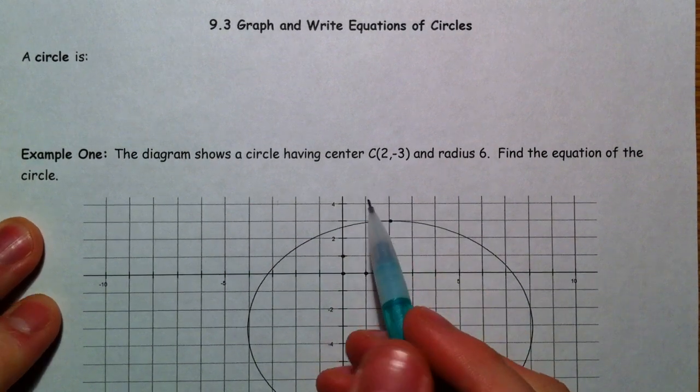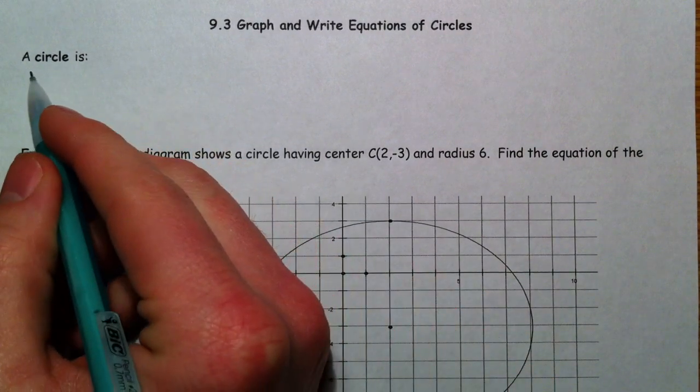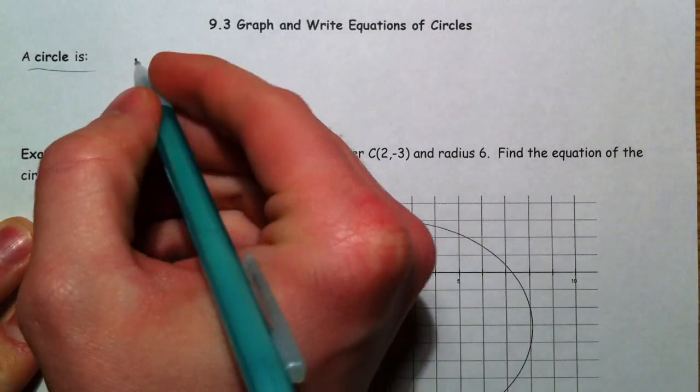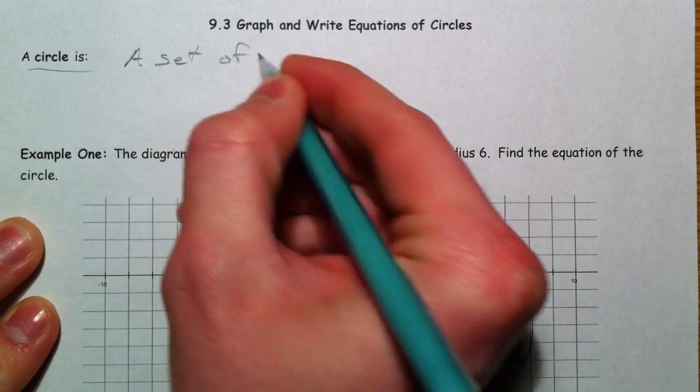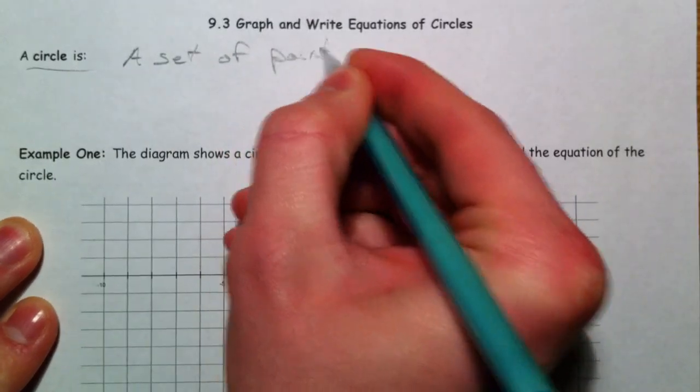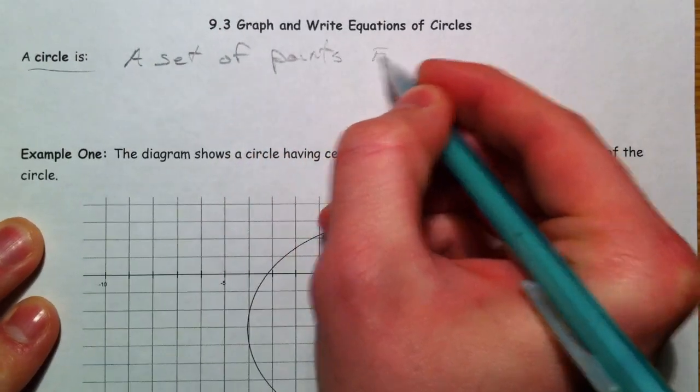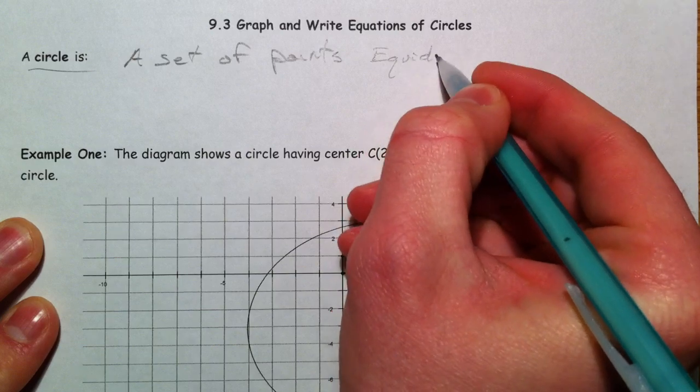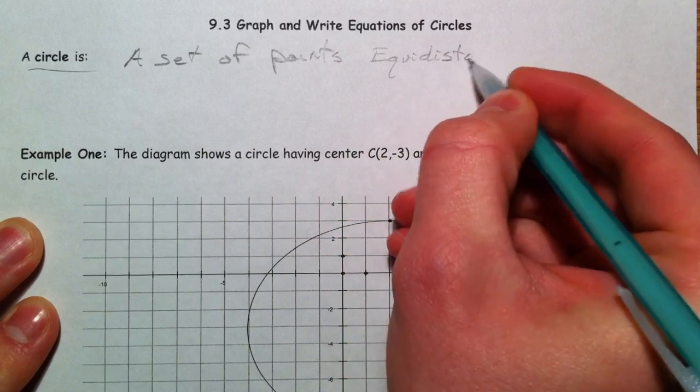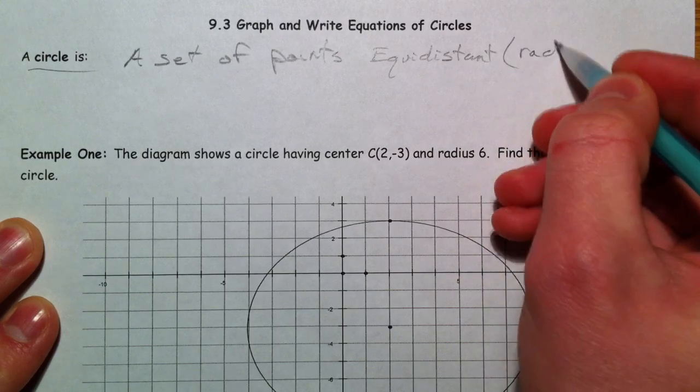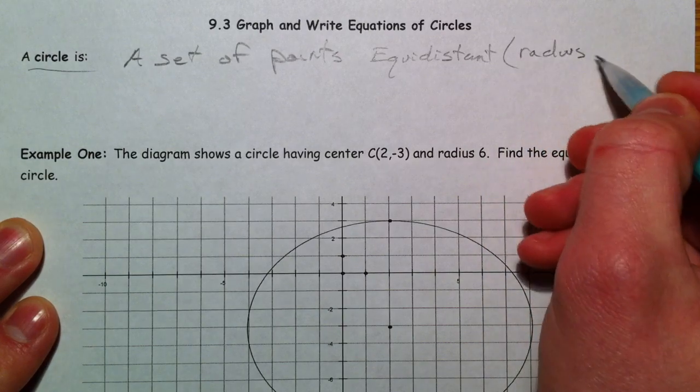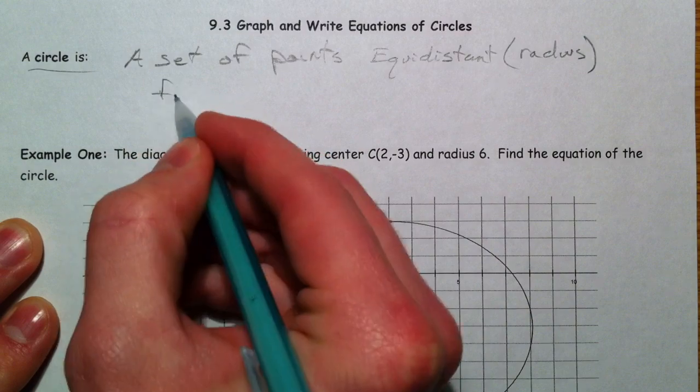Alright, we're talking about circles. Circles are defined geometrically as a set of points equidistant. There's that word again, equidistant. And in this term, equidistant is that radius, equidistant from a center point.